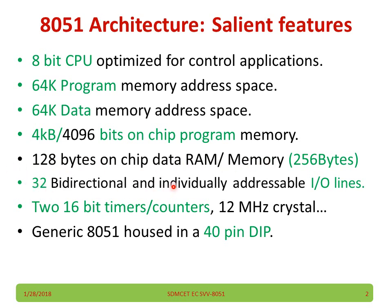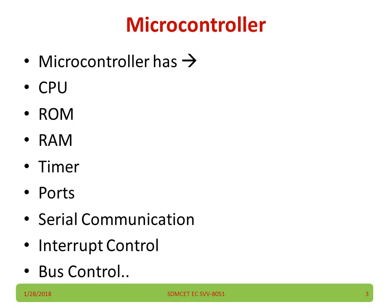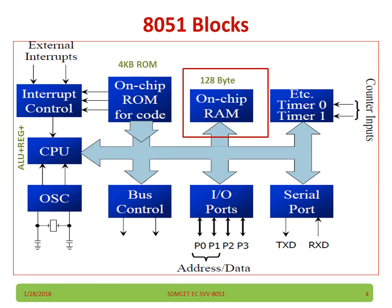It has 32 bi-directional and individually addressable I/O lines, two 16-bit timer/counters. It has a total 40-pin IC, and the microcontroller contains a CPU, ROM, RAM, timer, ports, serial communication, etc. We are going to discuss about this on-chip 128-byte RAM in this video.